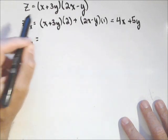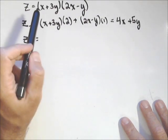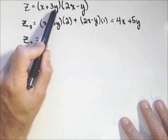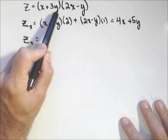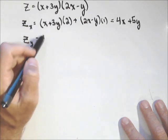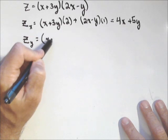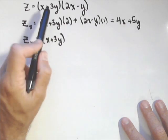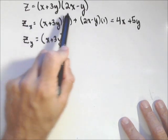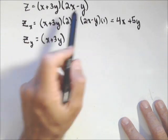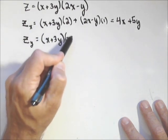Z sub y. Now I'm going to do the exact same thing, except I'm holding x constant. y is now my variable. So I'm still going to hold this first part, leave it alone, so (x + 3y), but now when I take the derivative of this part here, I'm taking it with respect to y. So it's a negative 1.